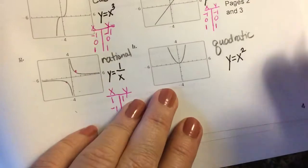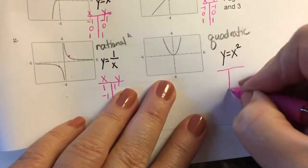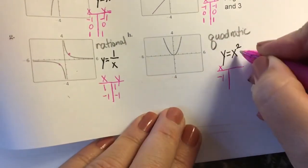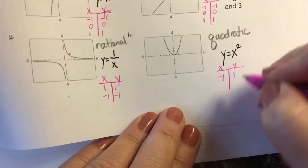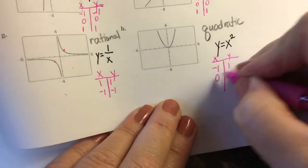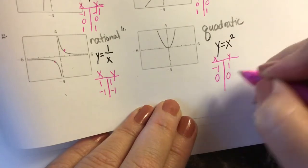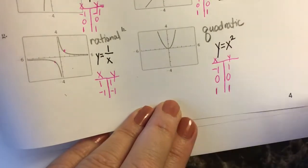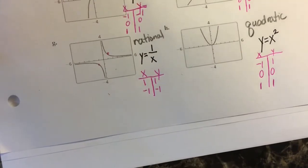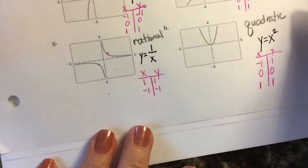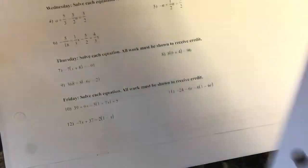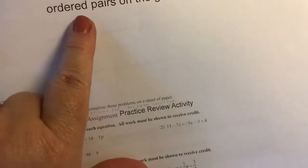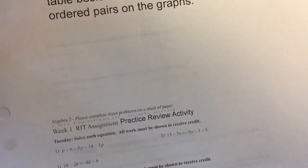Then looking for the next one, the quadratic: if x is -1, -1 squared is 1, if x is 0, 0 squared is 0, if x is 1, 1 squared is 1. So those are all the tables that you would use for these functions for page 2 and page 3. I think we did everything that was asked.